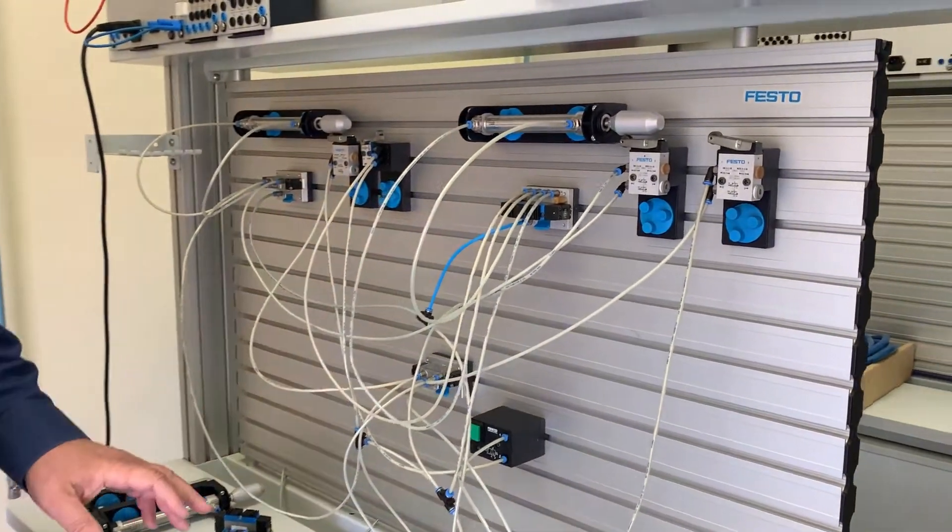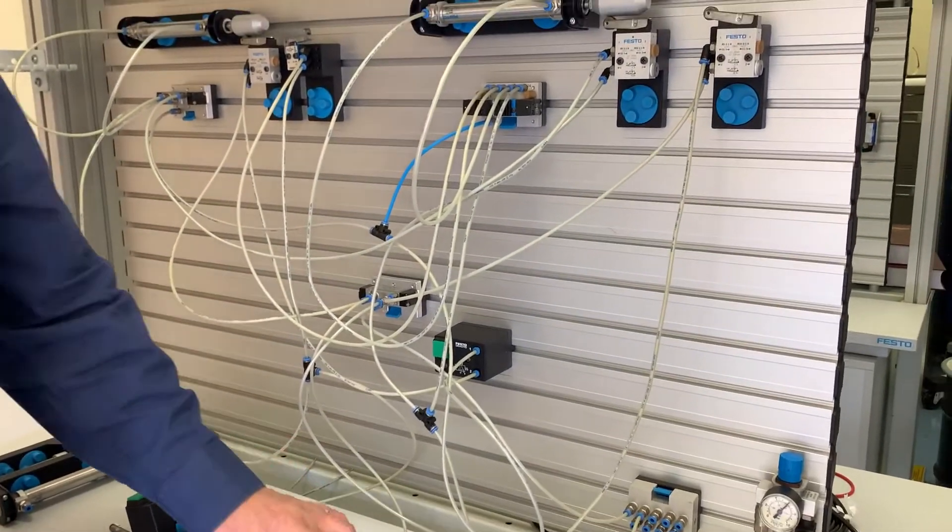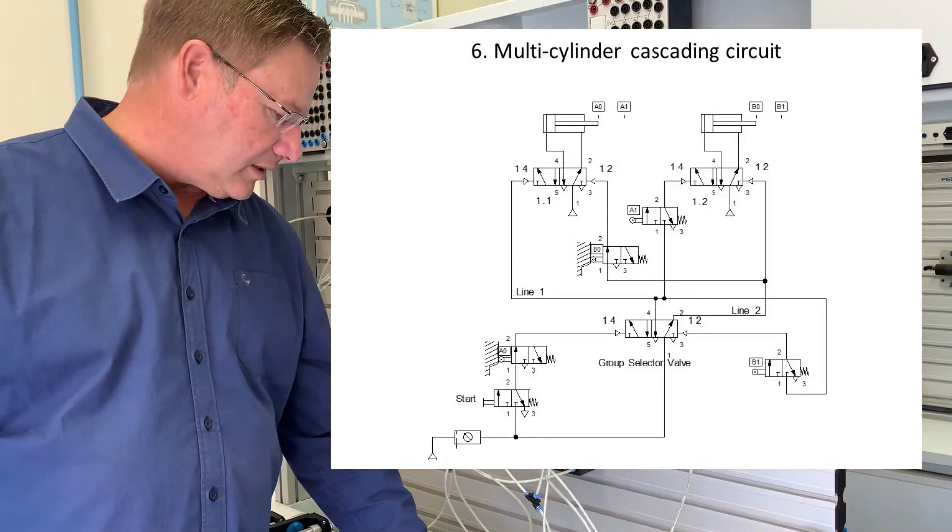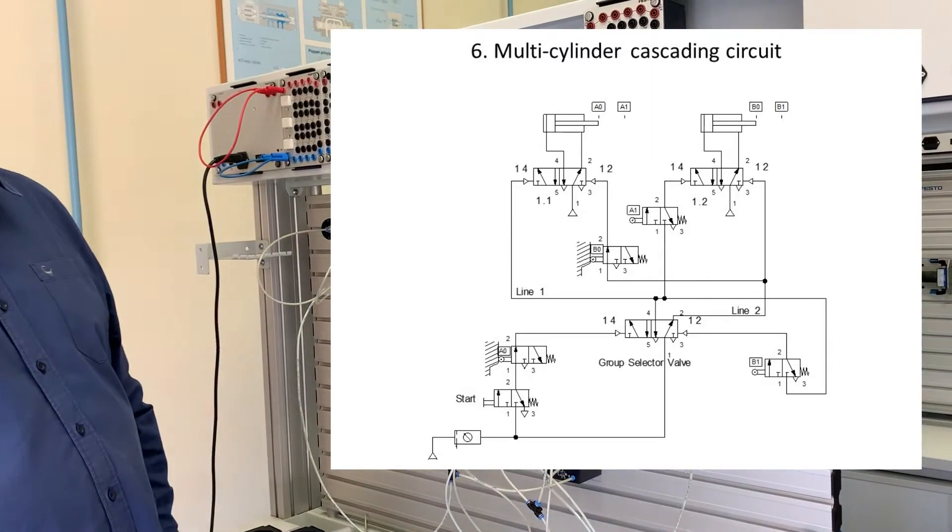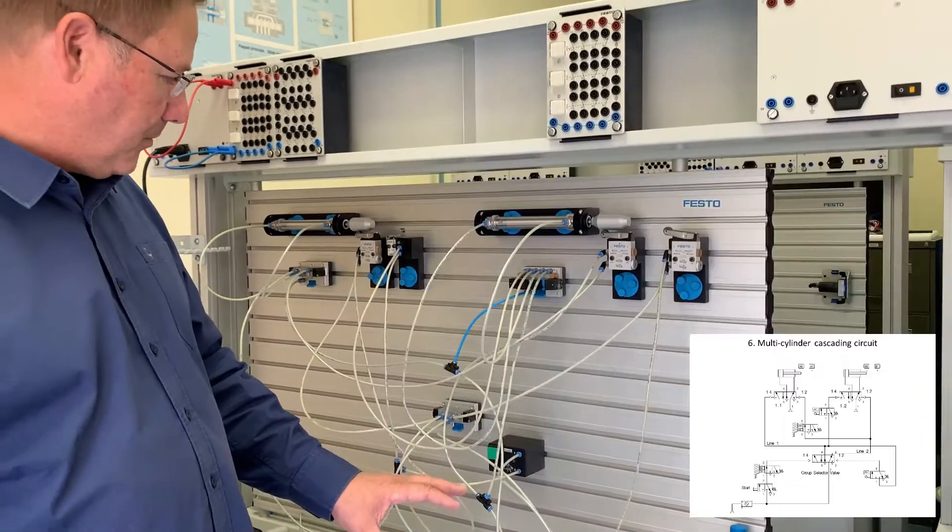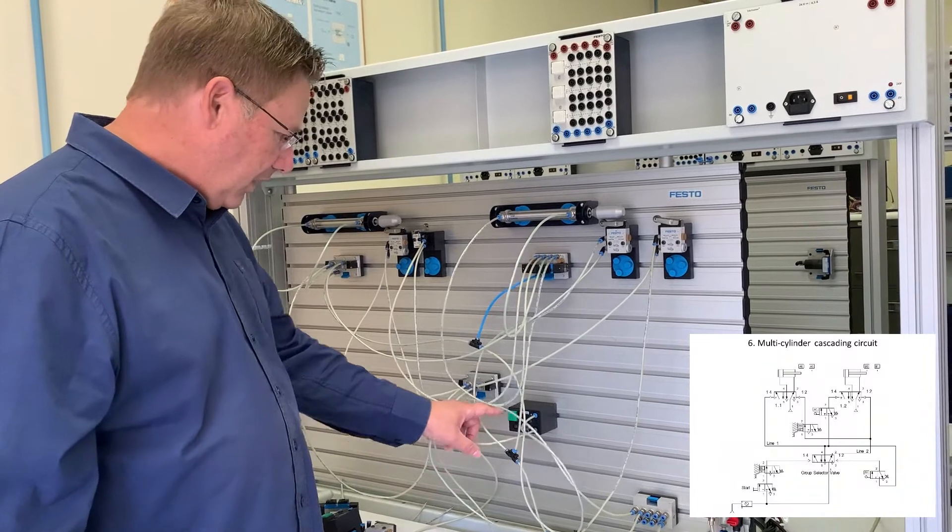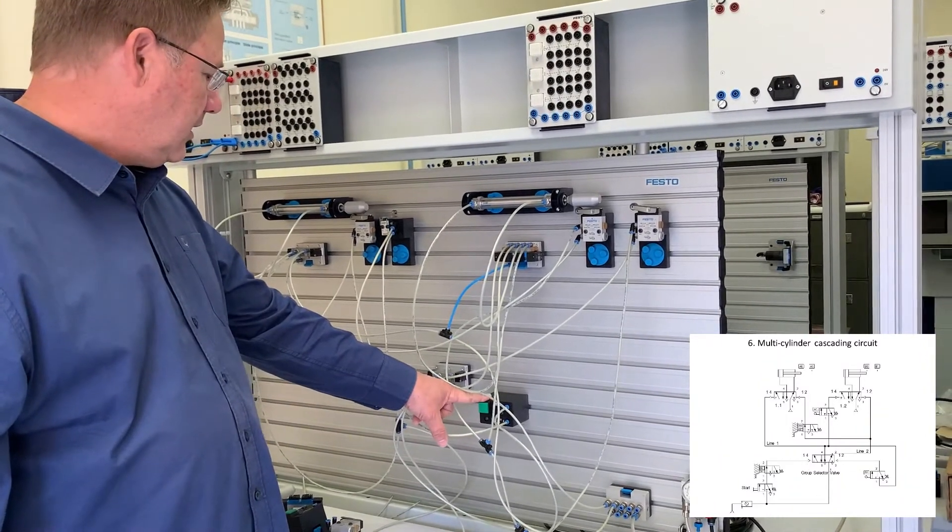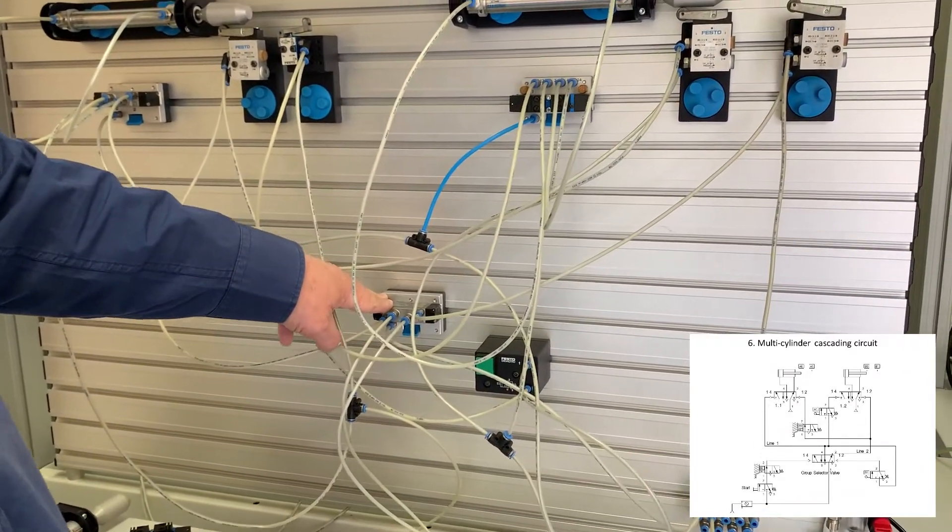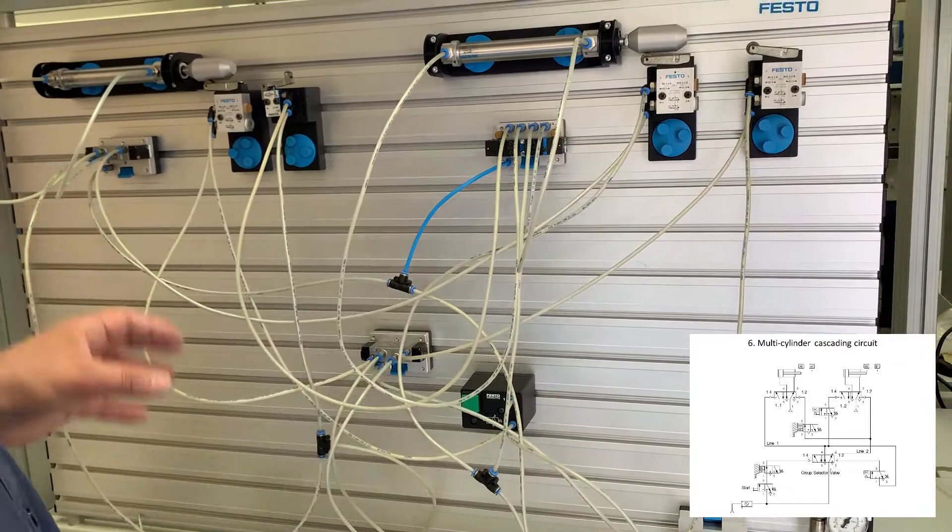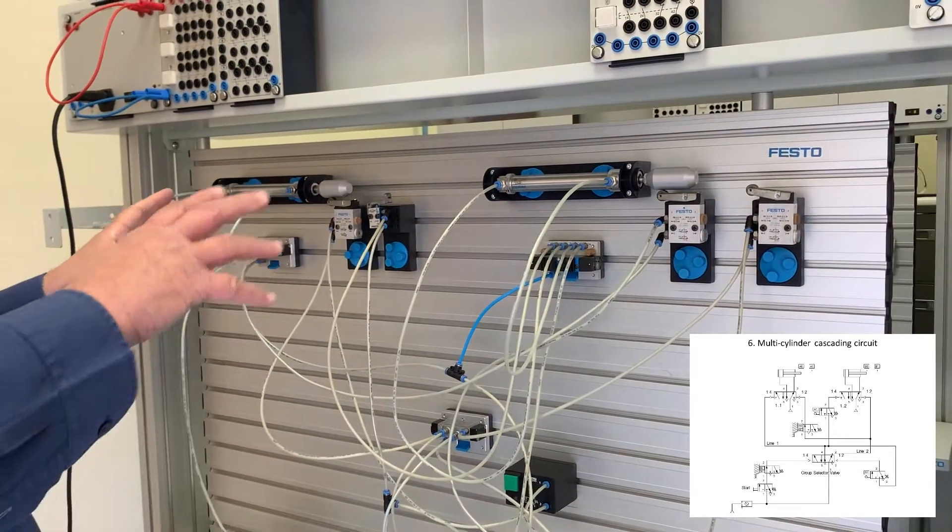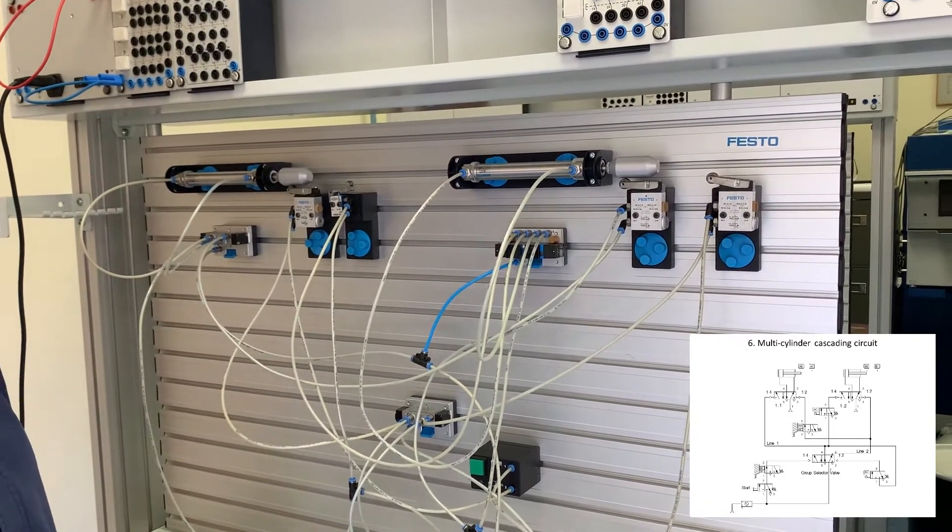So on this circuit if you go to the notes you will see the circuit diagram for exercise number six. So have a look at that when you're watching this video as well so that you can understand it a little bit better. But our air supply comes through and here's our start button and this is the group selector valve. So this valve is a five two-way valve which is used to switch between two separate circuits and that is to allow the functionality of the pneumatic circuit without it locking itself up.